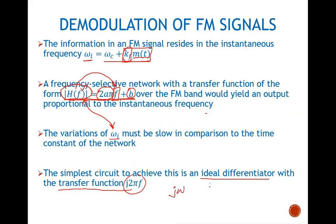From the differentiation property of the Fourier transform, if we have time differentiation, the Fourier transform means we simply multiply j*omega with the undifferentiated Fourier transform. This is the differentiation property of the Fourier transform, and from that we can also see that j*omega is equal to j*2*pi*f.